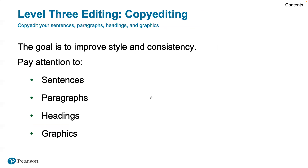The third level is copy editing, and the goal is to improve the style and consistency. For sentences, make sure they are clear and concise: are the subjects easy to locate, do verbs express actions, can we eliminate prepositional phrases, and is the sentence at a breathing length — meaning you can read it in one breath?